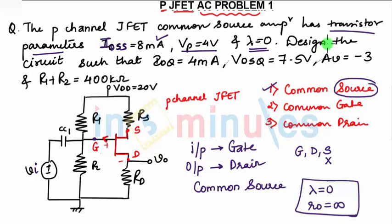They are telling us to design the circuit such that the quiescent current is 4 milliamperes, drain to source voltage is 7.5 volts, and the voltage gain is given as minus 3. And the total resistance R1 plus R2 is 400 kilohms. So we need to find out the value of RS, RD, R1, and R2.